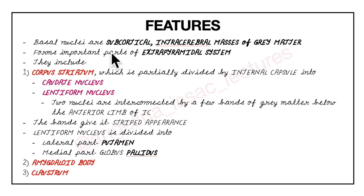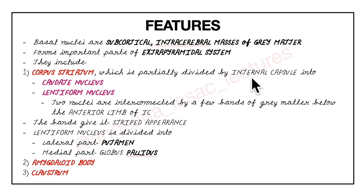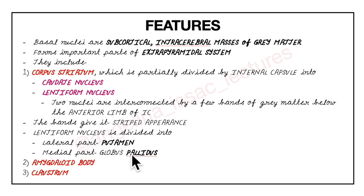To concise what we have learned: the basal nuclei are subcortical intracerebral masses of grey matter forming important parts of the extrapyramidal system. It includes three parts: the corpus striatum, the amygdaloid body, and the claustrum. The corpus striatum is divided by the internal capsule into the caudate nucleus and the lentiform nucleus, interconnected by bands of grey matter. The lentiform nucleus is divided into the putamen (lateral) and the globus pallidus (medial).